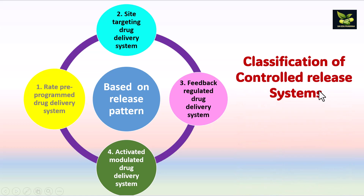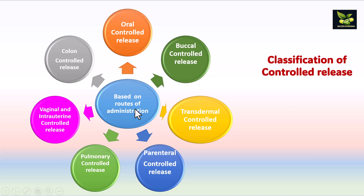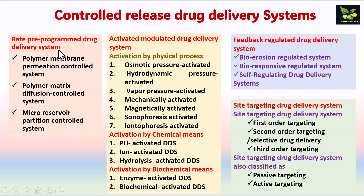Classification of controlled release systems based on release pattern includes: rate-programmed drug delivery systems, site-targeted drug delivery systems, feedback-regulated systems, and activated-modulated systems. Based on route of administration: oral, buccal, transdermal, parenteral, pulmonary, vaginal, intrauterine, and colon controlled release. Rate pre-programmed systems include polymer membrane permeation control, polymer matrix diffusion control, and micro-reservoir partition control. Activated-modulated systems can be activated by physical, chemical, or biochemical processes. Feedback-regulated systems include bioerosion, bioresponsive, and self-regulating. Site-targeting can be first, second, or third order, or passive or active targeting.